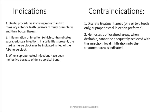It is also indicated in cases where supraperiosteal injections have been ineffective due to the presence of dense cortical bone. Contraindications include discrete treatment areas restricted to one or two teeth, and when hemostasis of a localized area is desirable and cannot be adequately achieved with this block — in such cases, local infiltration is indicated instead.